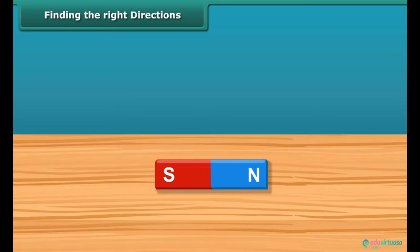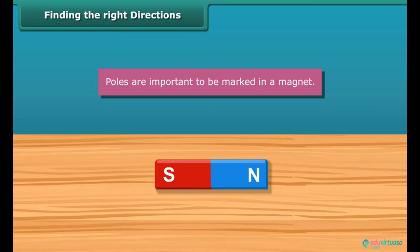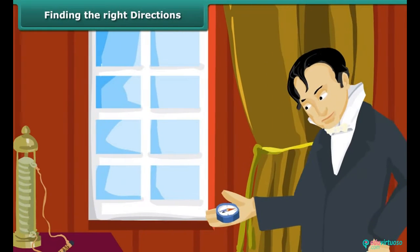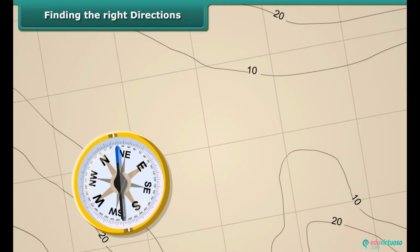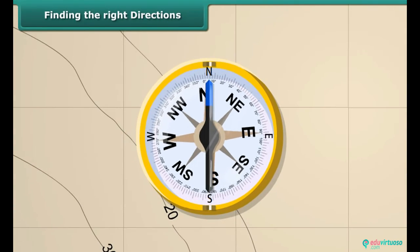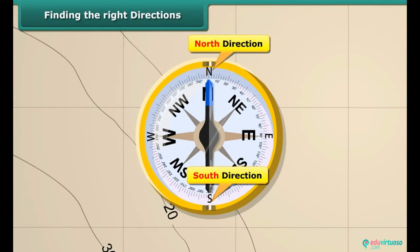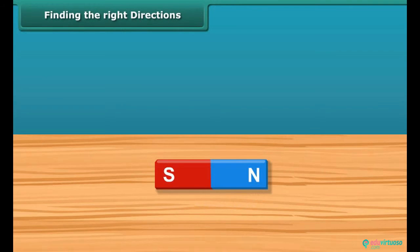Finding the right directions. Once you know about the poles of a magnet, you should also be able to mark the location of the poles. We all know that to find directions we use a compass. This compass has a needle that keeps moving in all directions, but when steadied always points to the south. This helps us find directions accurately, which is why we need to mark the poles of a magnet.